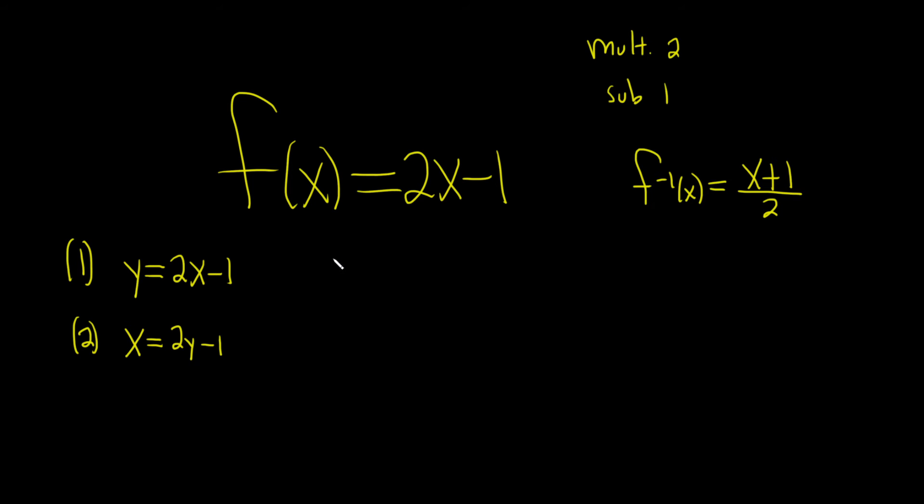And the third step is the hardest step, and we have to solve for y. So it looks like we'll add 1 here to get rid of it, so plus 1 plus 1. So we have x plus 1 equals 2y. It's being multiplied by 2, the y, so we just have to divide by 2. So you have x plus 1 over 2.